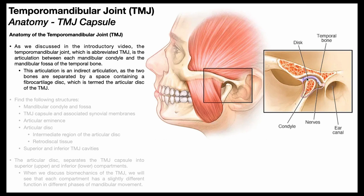If we look within the joint space of the TMJ, we see that it's an indirect articulation between the mandibular condyle inferiorly and the mandibular fossa superiorly. That's due to the presence of the articular disc. Most synovial joints will have the articular cartilage of one bone in direct contact with the articular cartilage of the other bone, with only synovial fluid in between. But here, the articular disc interrupts that. Functionally, the articular disc is very important to the biomechanics of the TMJ, which we'll discuss in the coming videos.